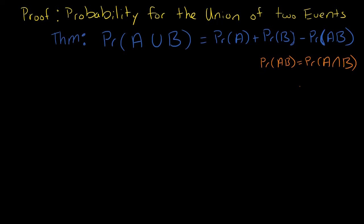You'll see this written both ways depending on the statistician. Because intersection means 'and', a lot of times people just don't write anything between the two events and leave it like that. Union, though, always has the U symbol. But intersection — it's A and B — so you just write them right next to each other. All right, so let's go ahead and prove this theorem. Why is this true?